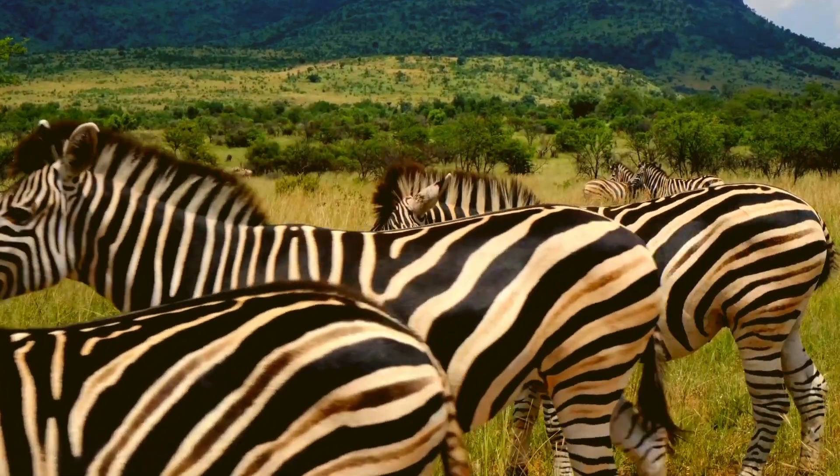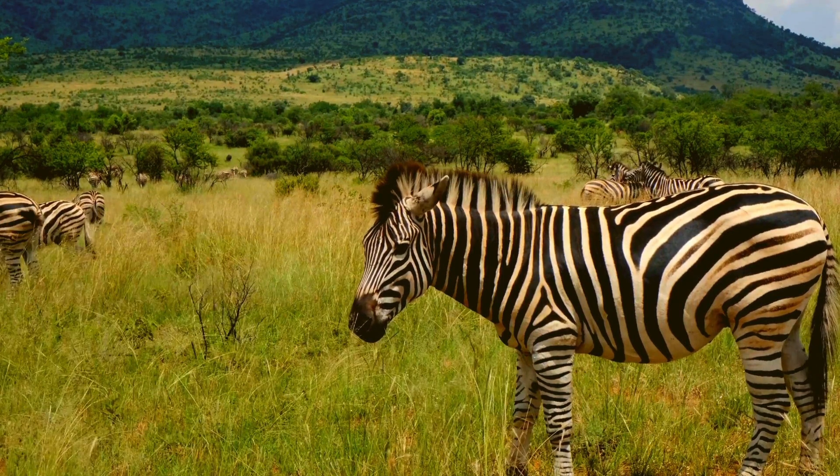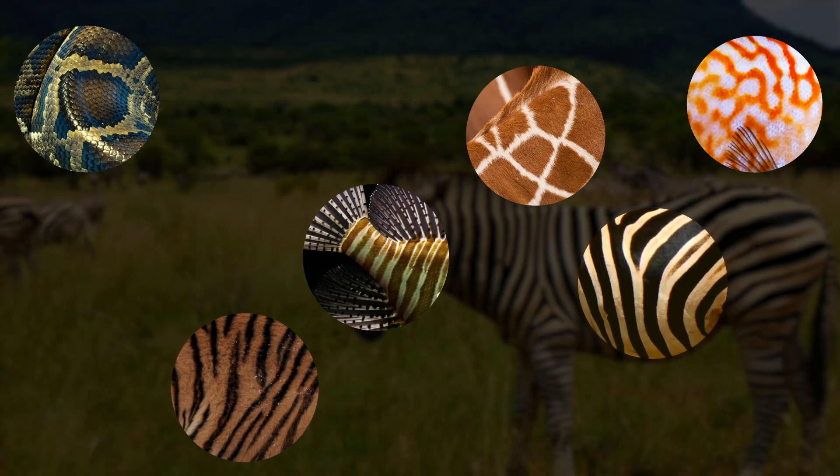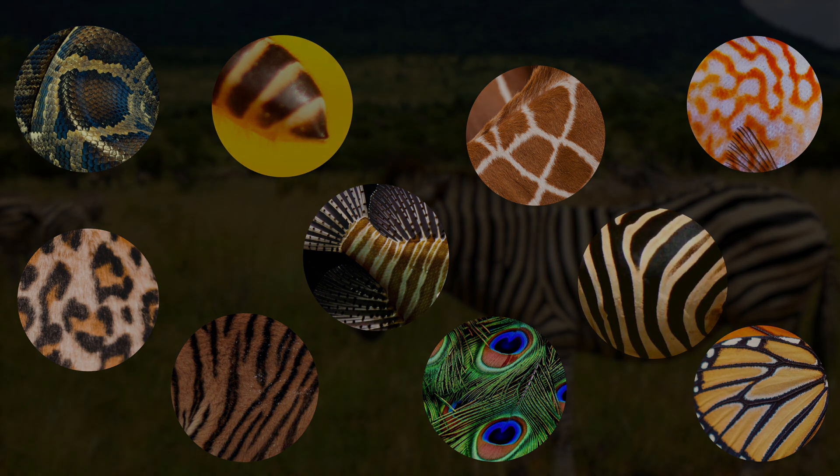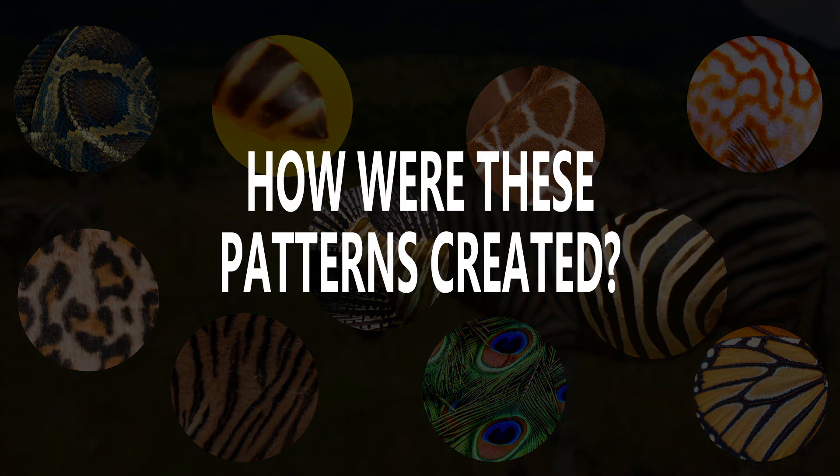These animals are full of patterns. Stripes on zebras, curls on fishes, spots on cheetahs. Almost any animal can be recognized by its unique pattern. The question we will ask ourselves in this video is, how were these patterns created?